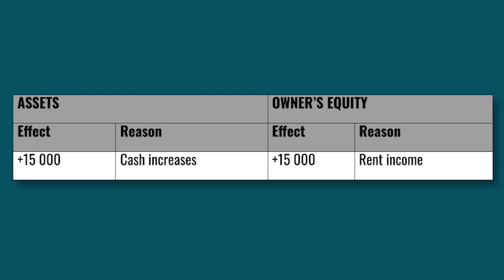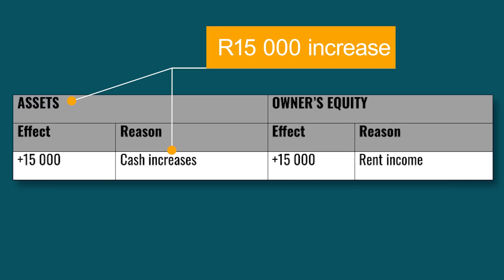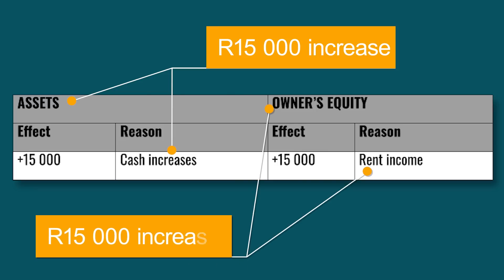Let's look at the equation table. It is divided into two columns. On the asset side, the effect is a plus 15,000 rand — because cash increases. On the owner's equity side, the effect is also a plus 15,000 rand — and the reason for that is rent income.